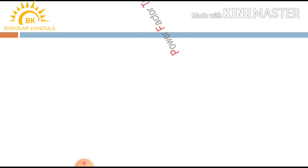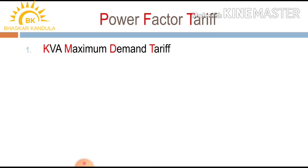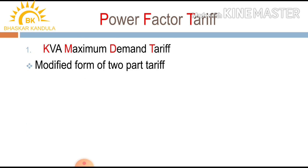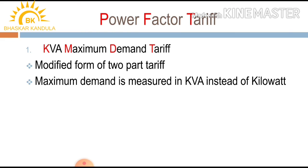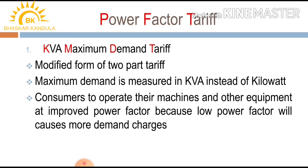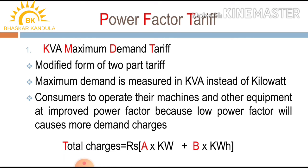The KVA maximum demand tariff is a modified form of two-part tariff. In this case, maximum demand is measured in kilo volt ampere instead of kilowatt. This encourages consumers to operate their machines and equipment at improved power factor, because a lower power factor causes higher demand charges. The expression is: total charges = rupees a × kilowatt + b × kilowatt hour.